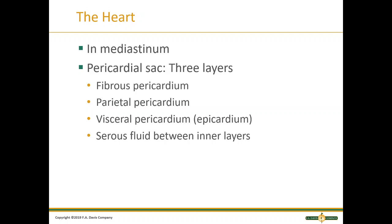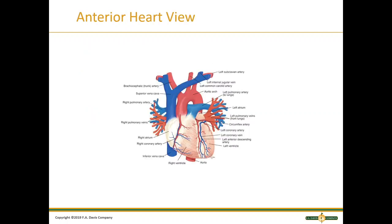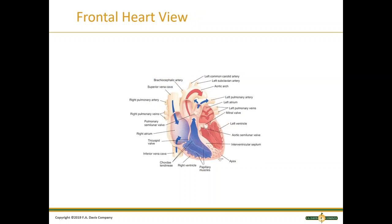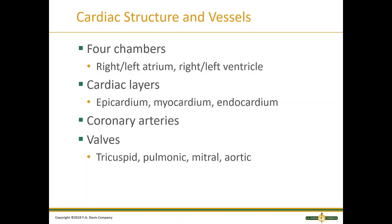Here is an illustration of the anterior heart view — make sure you re-familiarize yourself with this. Review the diagram of cardiac structure and vessels. We have four chambers: the right and left atrium, and the right and left ventricle. We have the cardiac layers: epicardium, myocardium, and endocardium; the coronary arteries; and the valves: tricuspid, pulmonic, mitral, and aortic.